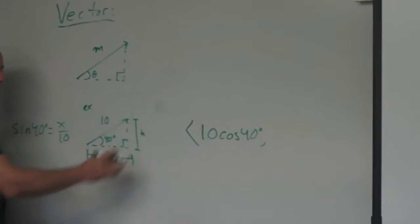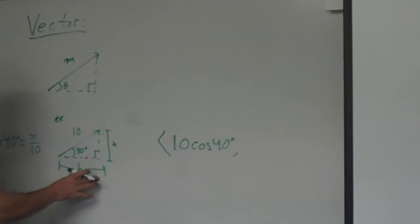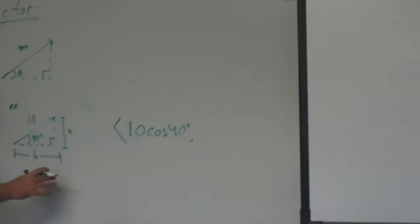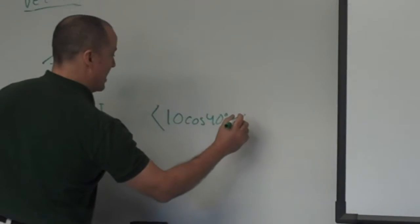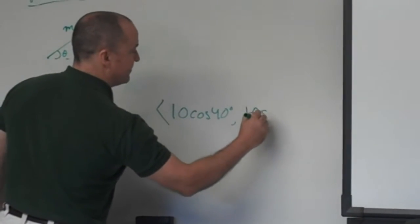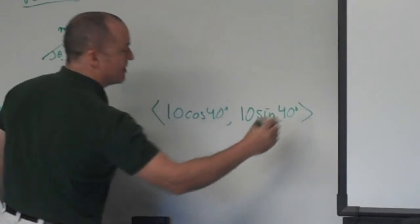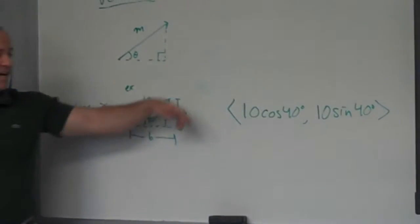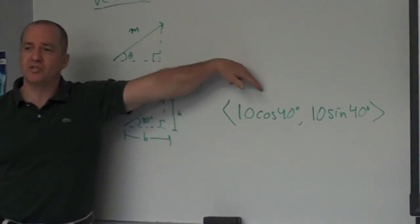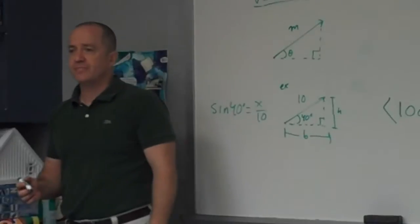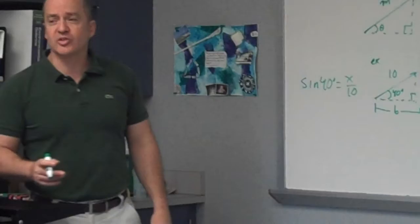So 10 cosine 40. Student: So B is the X axis and H is the Y axis? Teacher: Correct. Correct. So I was just using base and height for the triangle. So the base, the X part, is going to be 10 cosine 40. And the Y part is going to be 10 sine 40. One way you can help remember which is which, remember, on the unit circle, X is always cosine and Y is always sine.